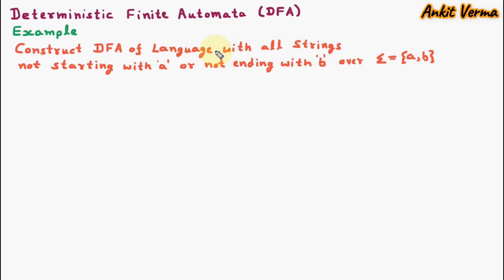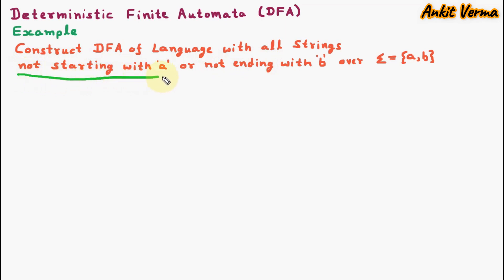This is not a normal question, this is a tricky question. Whenever we find 'not' or 'not', these are not normal words, so this question will be solved by a trick. We are going to construct the DFA for strings where at the start A should not be there, or at the end B should not be there. So 'not starting with A' I am assuming as A, and 'not ending with B' I am assuming as B, and we are having OR, and the sign of OR is union.